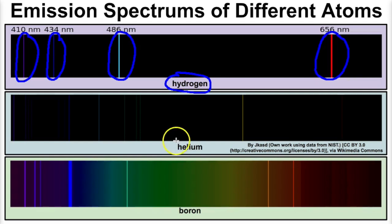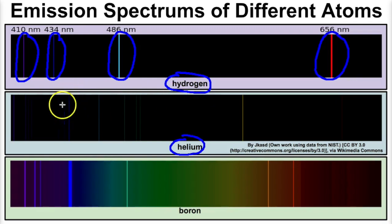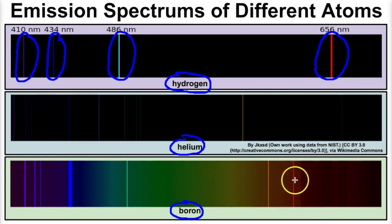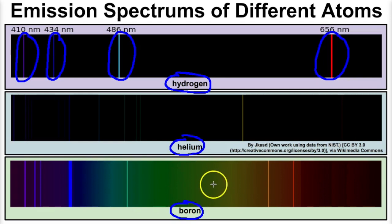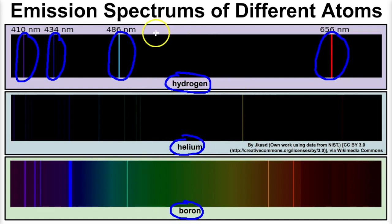This is the fingerprint of hydrogen — its emission spectrum. Helium has a different emission spectrum with yellow photons and others. Boron shows red and orange photons being released. We use emission spectrums to determine the types of atoms present in distant stars many light years away — we collect that light in a telescope and identify which elements make up stars hundreds of millions of light years away based on each atom's fingerprint.